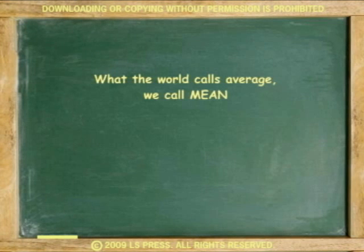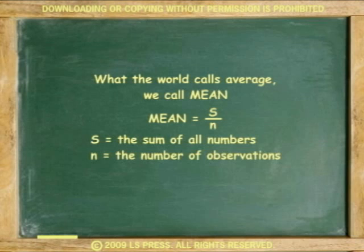Frequently known as average, the mean of a set of data is found by adding and then dividing. It is computed using the equation mean equals s over n, where s is the sum of all numbers and n the number of observations.